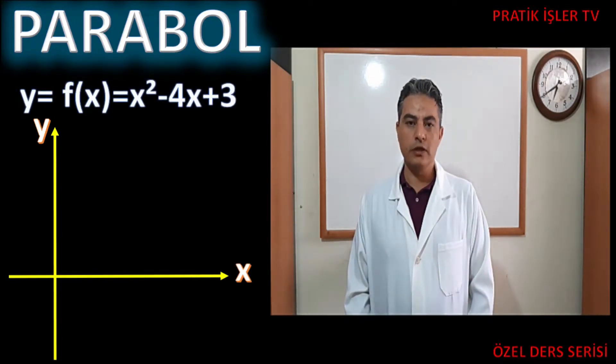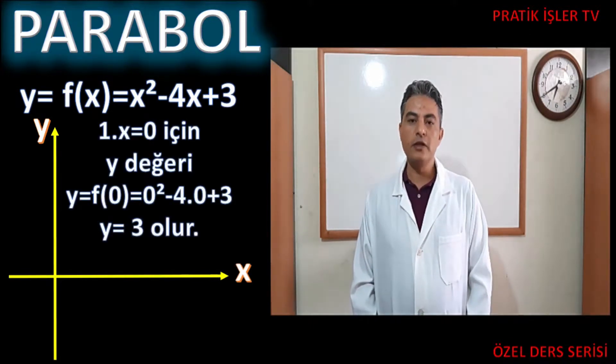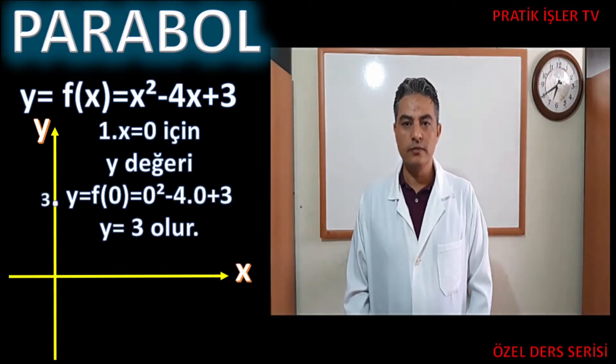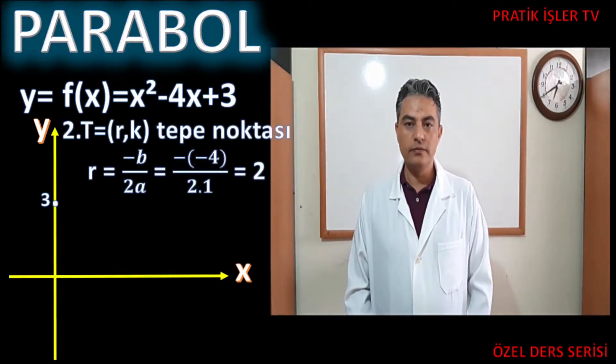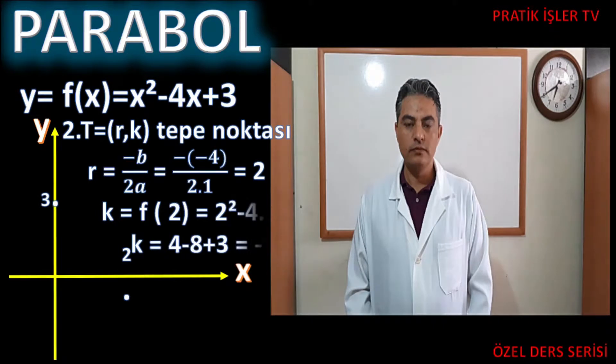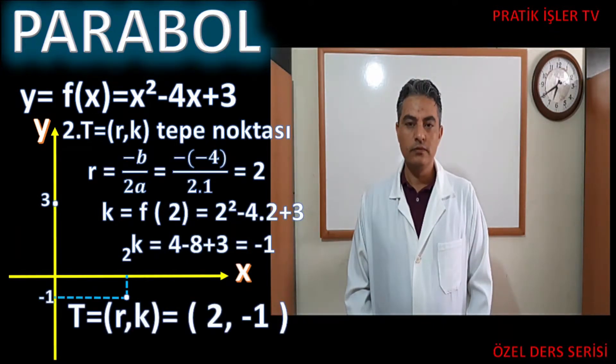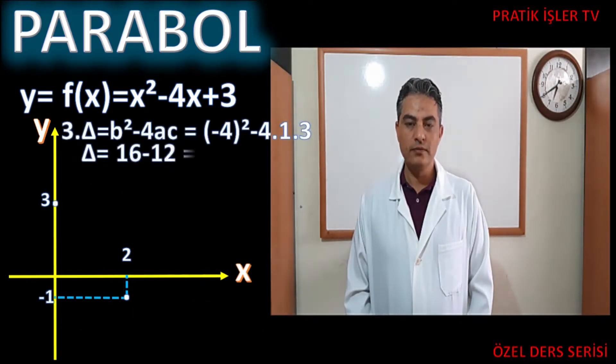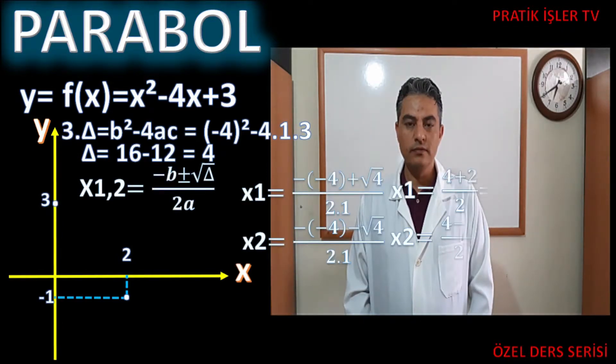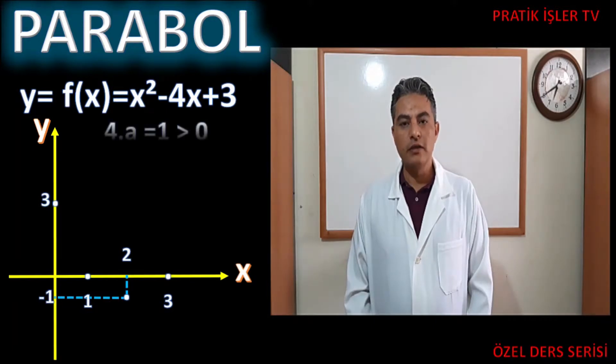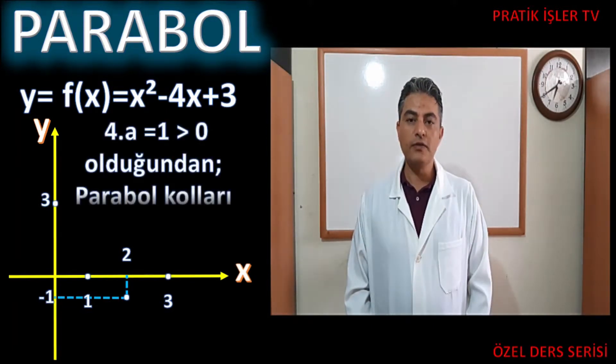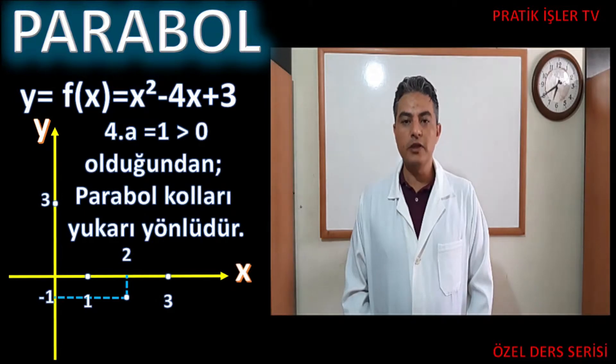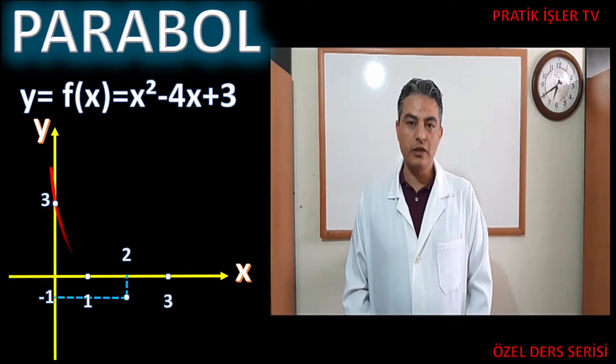Gelin bunu bir örnekle gösterelim. Denklemimizi görüyorsunuz arkadaşlar. Önce ne yapıyoruz? x eşittir sıfır deyip y değerini yani fonksiyonun grafiğin y'yi kestiği noktayı tespit ediyoruz. Sonra tepe noktasını hesaplıyoruz. Denklemin köklerini delta yöntemiyle çözüyoruz. Verilen bu örnekte a yani x karenin önündeki kat sayı sıfırdan büyük olduğu için kollar yukarı doğru olur diyoruz. Ve tespit ettiğimiz noktalar üzerinden parabolümüzü şekildeki gibi çiziyoruz.